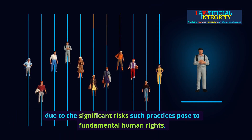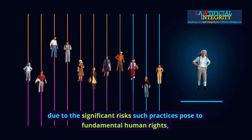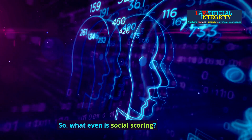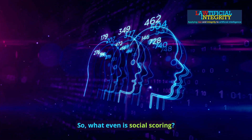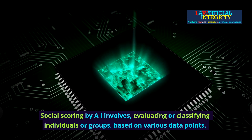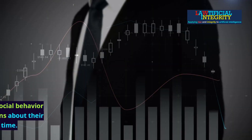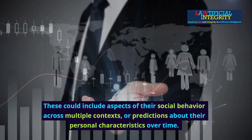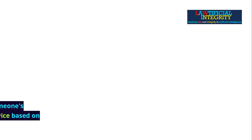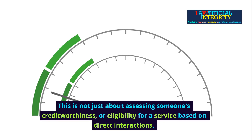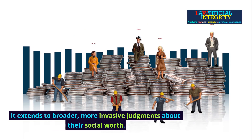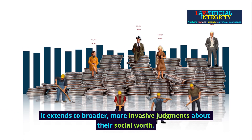This prohibition exists due to the significant risks such practices pose to fundamental human rights, including dignity, non-discrimination, equality, and justice. Social scoring by AI involves evaluating or classifying individuals or groups based on various data points. These could include aspects of their social behavior across multiple contexts or predictions about their personal characteristics over time. This is not just about assessing creditworthiness or eligibility for a service — it extends to broader, more invasive judgments about their social worth.